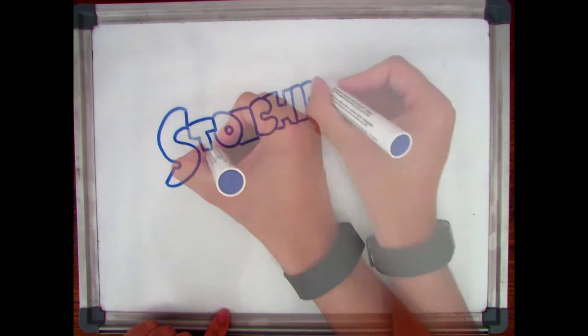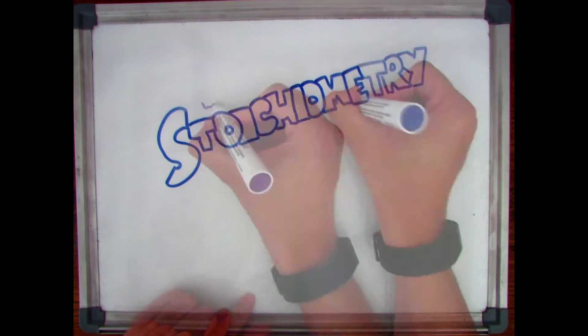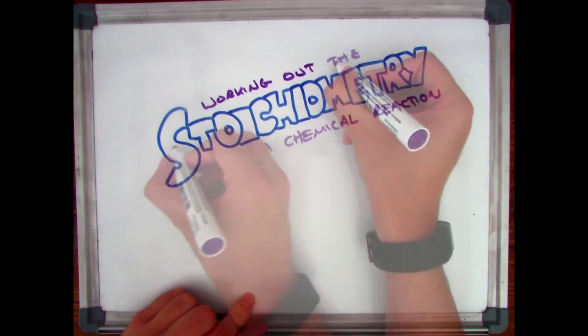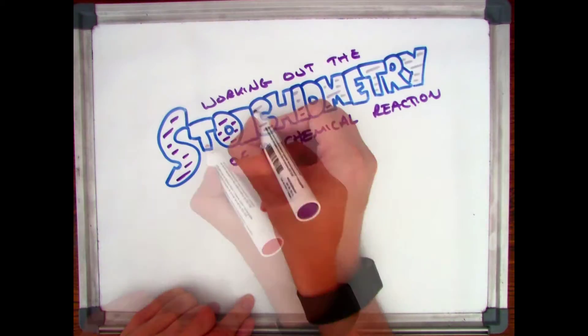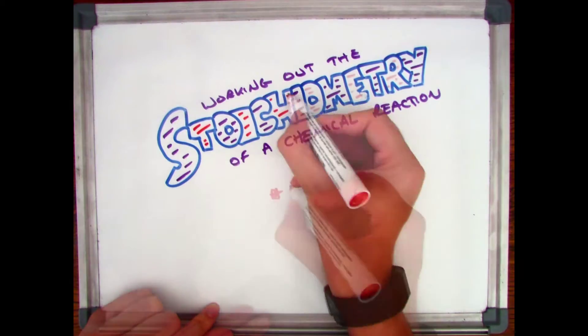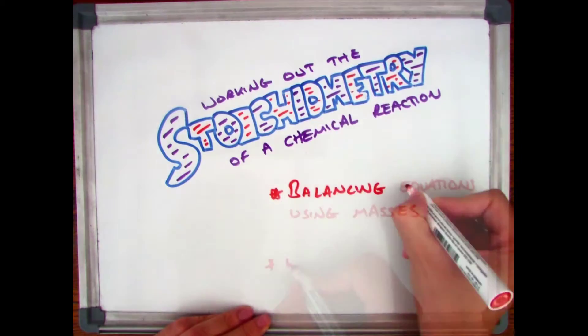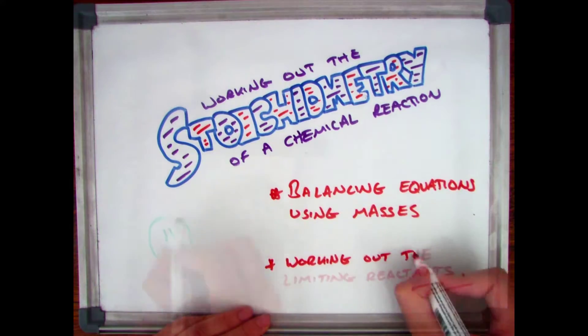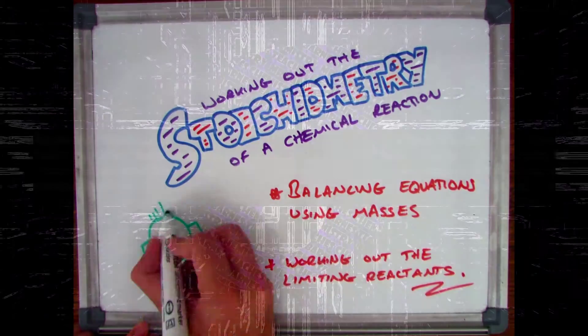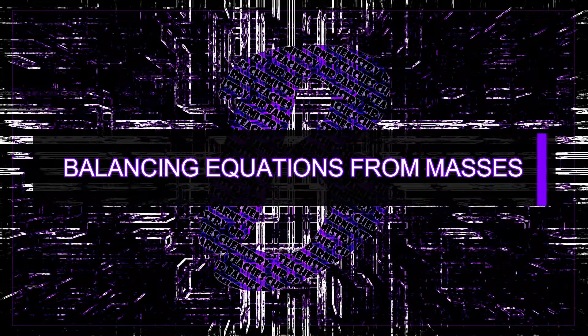Hi guys, welcome to this video on stoichiometry, where you're going to be looking at how you can work out the balanced equation when given the starting masses and how you can work out the limiting reactant for a chemical reaction.